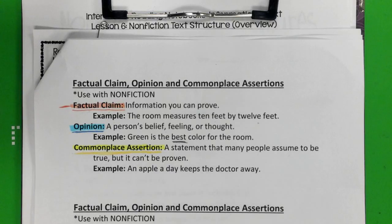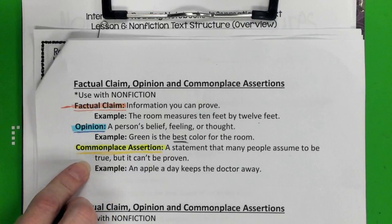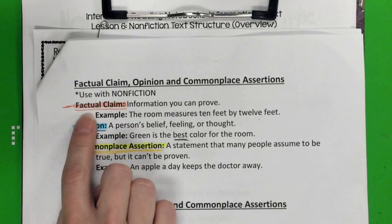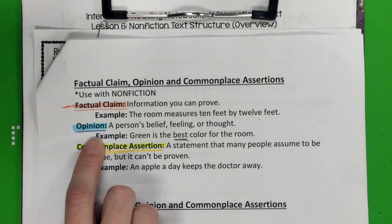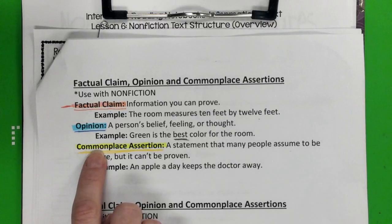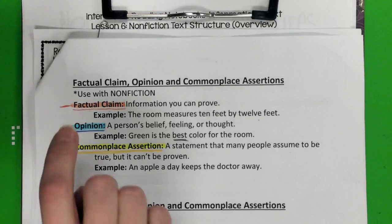Hello ladies and gentlemen, today should be Wednesday, January the 24th. We are going to be talking about factual claim, opinion, and commonplace assertions. I have highlighted and underlined these three things — I want you to do the same. Factual claim is highlighted in orange, opinion in blue, and commonplace assertion in yellow. You're going to need this possibly with your Garrett Holvey and Chef Jamie Oliver paper. Let's look at these and see what they mean.